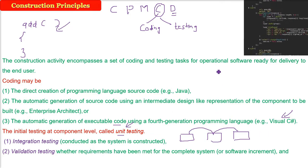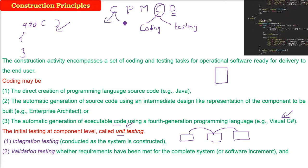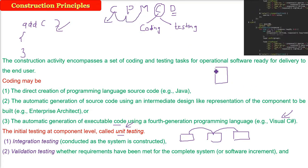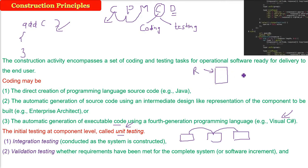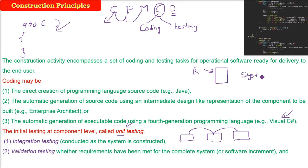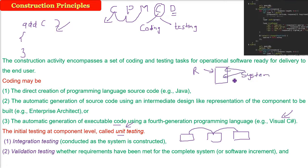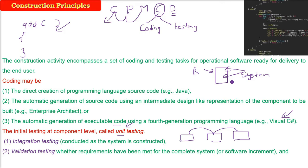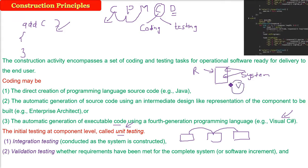User has given you some work, some requirements. These requirements have to be met as a complete system. So here we have to do validation testing. Validation testing is done for the complete system or software increment which has been delivered, based on the SRS or requirement specification.